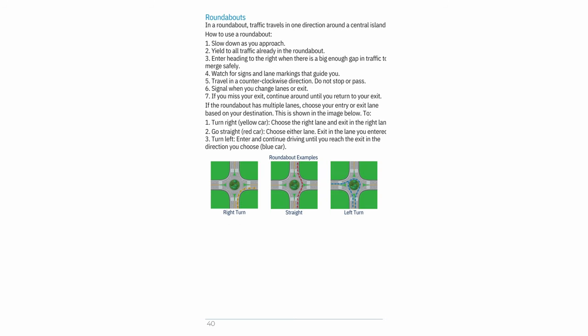Roundabouts: In a roundabout, traffic travels in one direction around a central island. How to use a roundabout: 1. Slow down as you approach. 2. Yield to all traffic already in the roundabout. 3. Enter heading to the right when there is a big enough gap in traffic to merge safely. 4. Watch for signs and lane markings that guide you. 5. Travel in a counterclockwise direction — do not stop or pass. 6. Signal when you change lanes or exit. 7. If you miss your exit, continue around until you return to your exit. If the roundabout has multiple lanes, choose your entry or exit lane based on your destination.